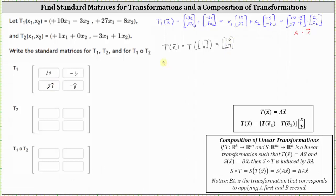For the transformation of E sub two, X1 = 0 and X2 = 1. The first component is 10 times 0 minus 3 times 1, which is negative 3. The second component is 27 times 0 minus 8 times 1, which is negative 8. Notice [negative 3, negative 8] is the second column of the standard matrix for T1.